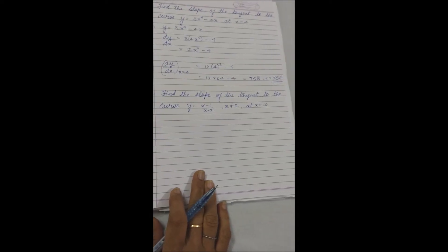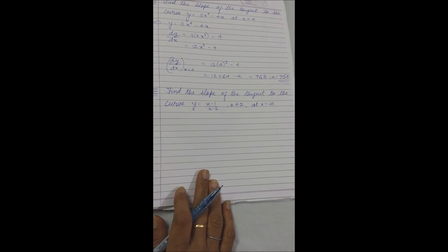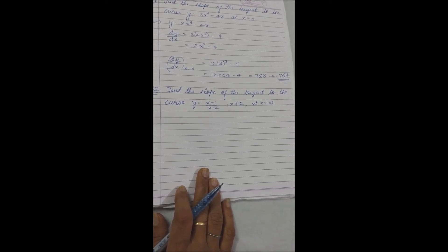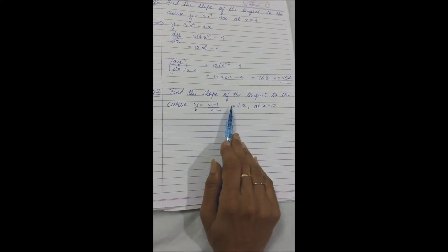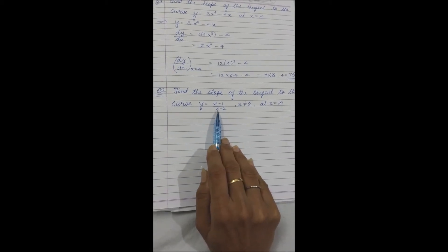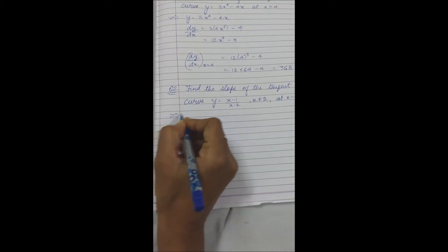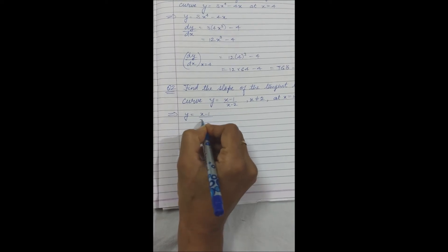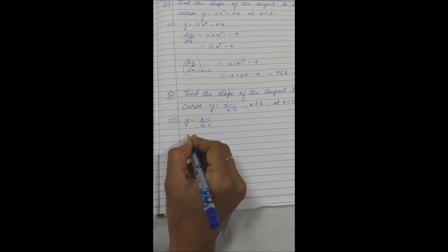Number 2 is: find the slope of the tangent to the curve y = (x minus 1) upon (x minus 2), where x should not equal to 2, at x = 10. We have to find slope at x = 10. x should not equal to 2 because if x is 2, the denominator will be 0 and the term will be undefined. So, whatever function is given to y, it will be a curve: (x minus 1) upon (x minus 2). For finding slope, we need to find dy by dx using the quotient rule.